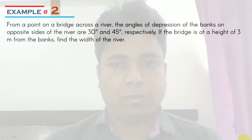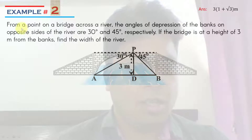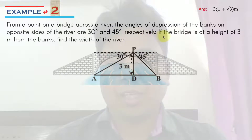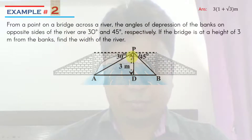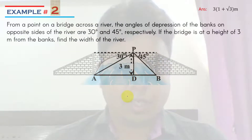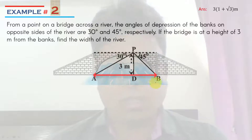Here is example number 2. The answer to this question is 3·(1 + root 3) meters. From a point on a bridge across a river, the angles of depression of the banks on opposite sides of the river are 30 and 45 degrees respectively. If the bridge is at a height of 3 meters from the bank, find the width of the river. As per the given question, this is a point P at the bridge making depression angles of 30 and 45 degrees with points A and B.